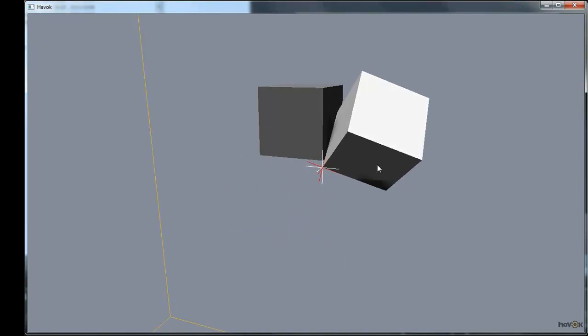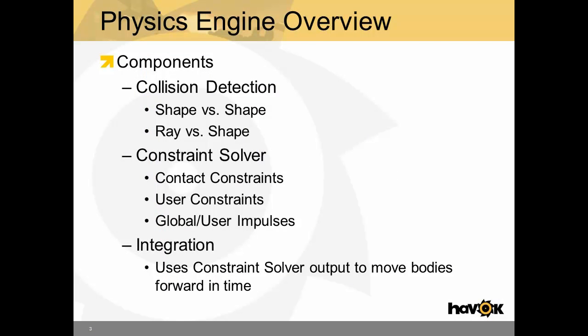The other thing that the constraint solver needs to understand is the global and user impulses that are in the system. That's things like gravity or user defined impulses on the objects. All of these impulses and constraints are known by the constraint solver. And it iterates over them and tries to resolve them. Havoc uses an iterative constraint solver. That means that with each iteration, the constraints get closer and closer to being resolved. This is actually a global setting within Havoc where you can tune how many iterations Havoc will use in order to solve constraints. This is a trade-off between performance and accuracy.